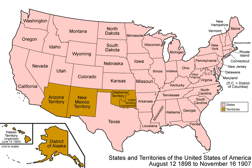Child labor reached a peak around 1900 and then declined except in southern textile mills as compulsory education laws kept children in school. It was finally ended in the 1930s.